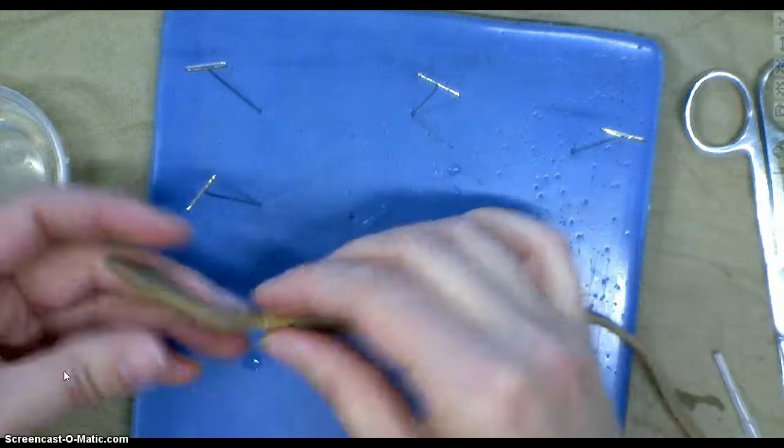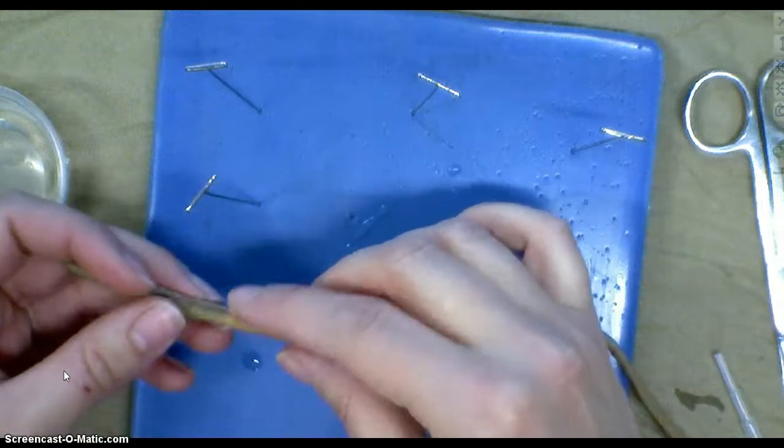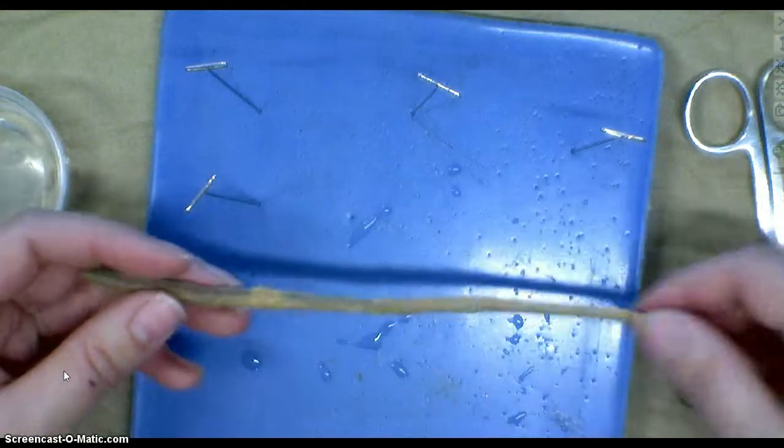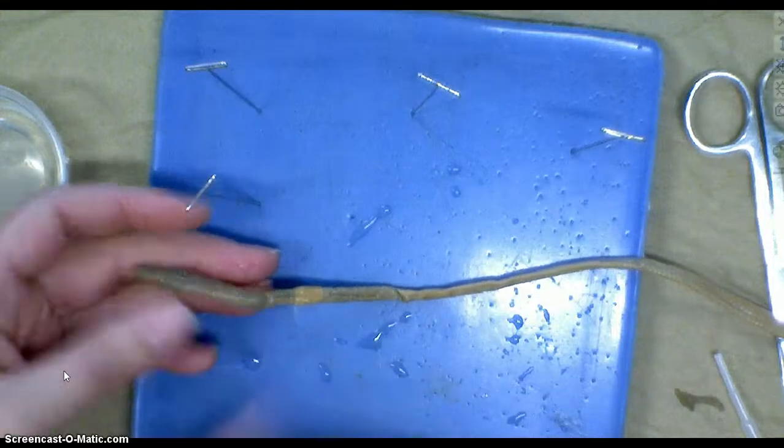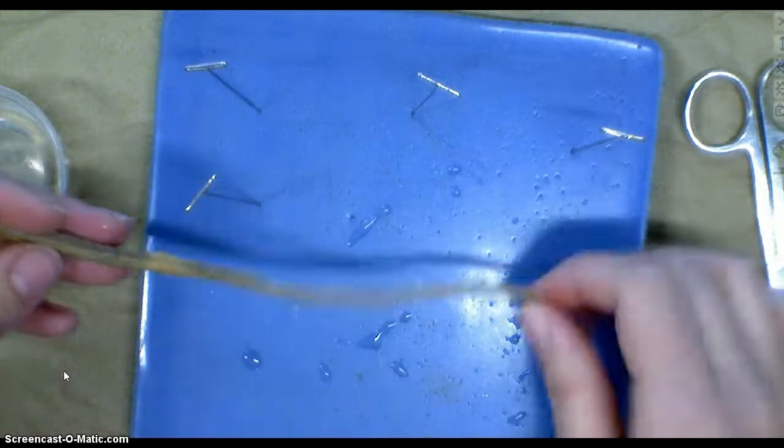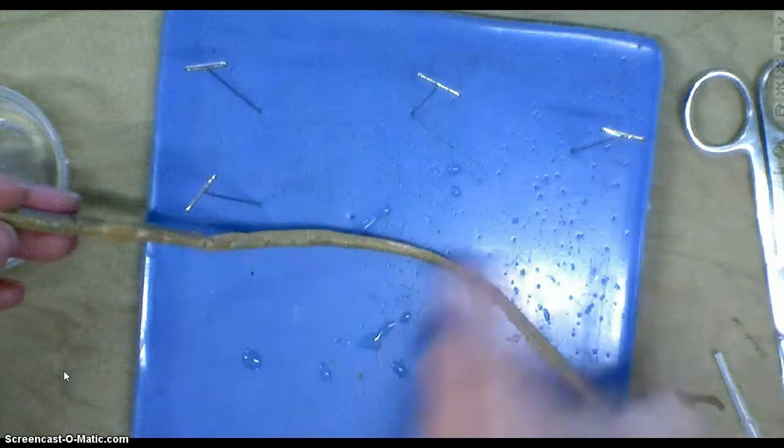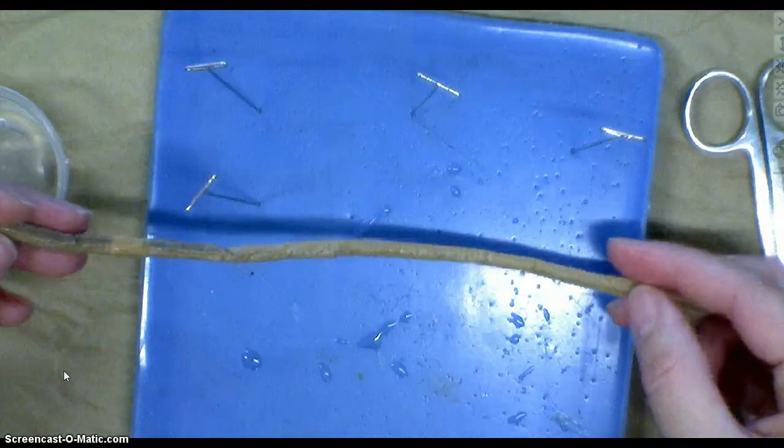Now this little structure here is called the clitellum, and it is always closer to the head end. Everything of importance is from the clitellum forward. There is nothing new from here to the back. It's just one long intestine and one long vein.